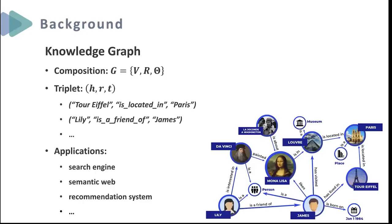Knowledge Graphs can provide a flexible but structured representation for entities and the intricate connections among them. A common Knowledge Graph is composed of the entity set, the relation set, and the set of fact triplets. Each triplet is denoted as HRT, where H and T are the subject and object entities, and R refers to the predicate of the triplet. Knowledge Graphs have a range of applications including search engines, semantic webs, recommendation systems, and so on.